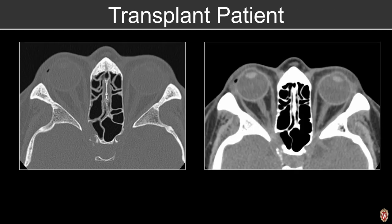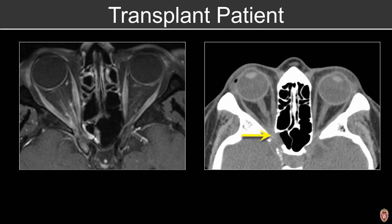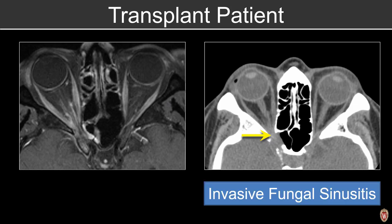In this transplant patient, we have to have a high index of suspicion for pathology. On bone windows we can see mild mucosal thickening within the ethmoid air cells and a focal area of dehiscence along the posterolateral margin of the sphenoid sinus. On soft tissue windows, there is focal opacification at the level of the orbital apex. In this transplant patient we have to be worried about invasive fungal sinusitis, and on MR we can see abnormal enhancement within the orbital apex — this patient had confirmed invasive fungal sinusitis.